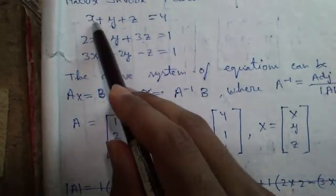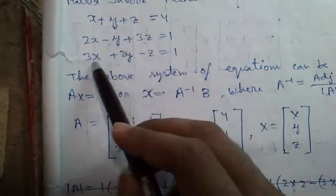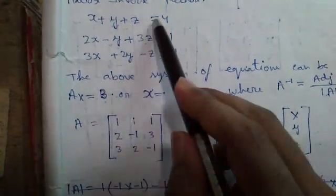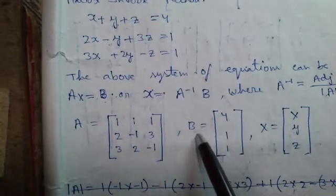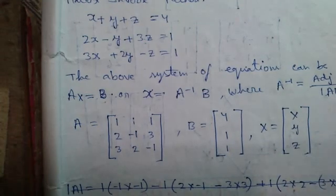By writing all the coefficients from the left hand side of the equations 1 1 1, 2 minus 1 3, 3 2 minus 1, we get matrix A. By writing all the numbers from the right hand side of the equations 4 1 1, we get matrix B. Matrix X is the third matrix which contains all the unknowns X Y and Z which we have to find out.